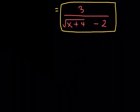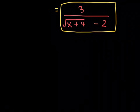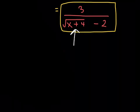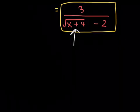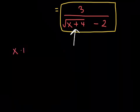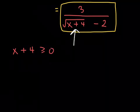There's a few things to consider. First of all, you see this radical expression in the denominator right here. We had a conversation about this before: the square root of x plus 4, to avoid imaginary solutions, x plus 4 has to be greater than or equal to 0. We talked about that before.